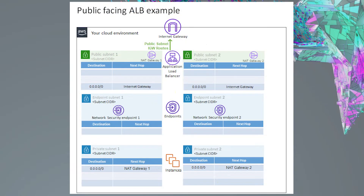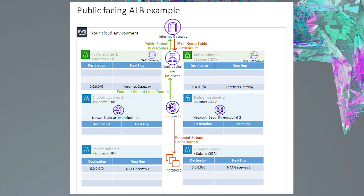We'll go ahead and add a line representing both public endpoint routes to the internet gateway, which already exists. Next, we'll add a line representing routes from the internet gateway to the public subnets, where the application load balancer resides — this comes from the main VPC route table's local route, which already exists. We'll also add a line representing the route from both endpoint subnets to both private subnets, which comes from the endpoint subnets' default local route, which also already exists. Lastly, we'll add a line representing the endpoint subnets' route to the application load balancer, which comes from the endpoint subnets' local route — the last route we'll add that already exists.